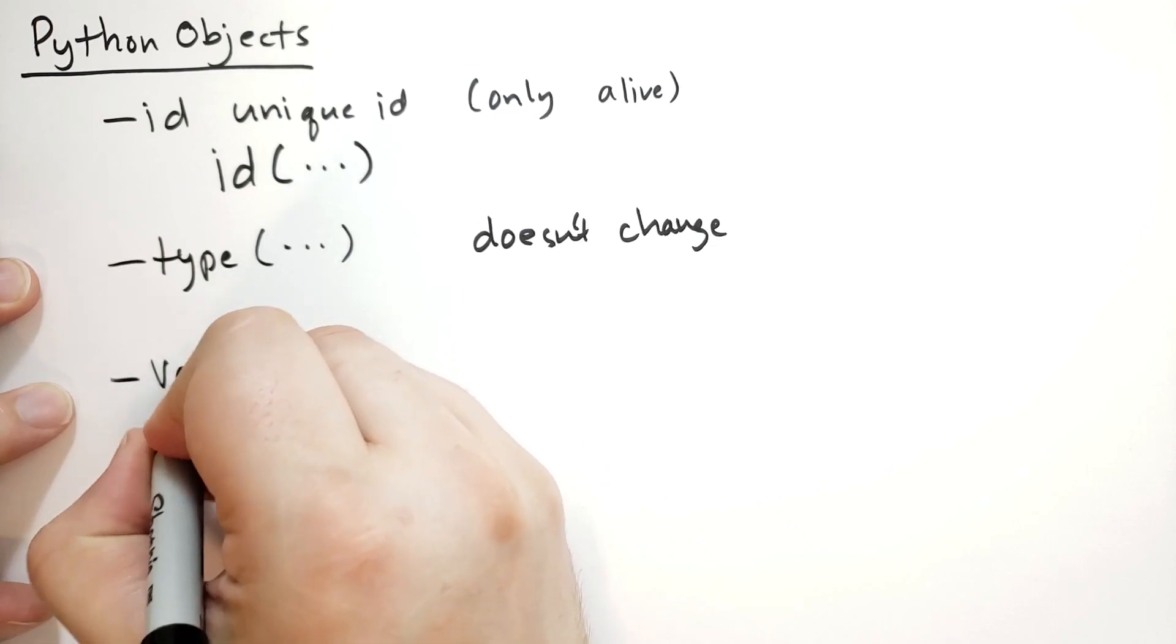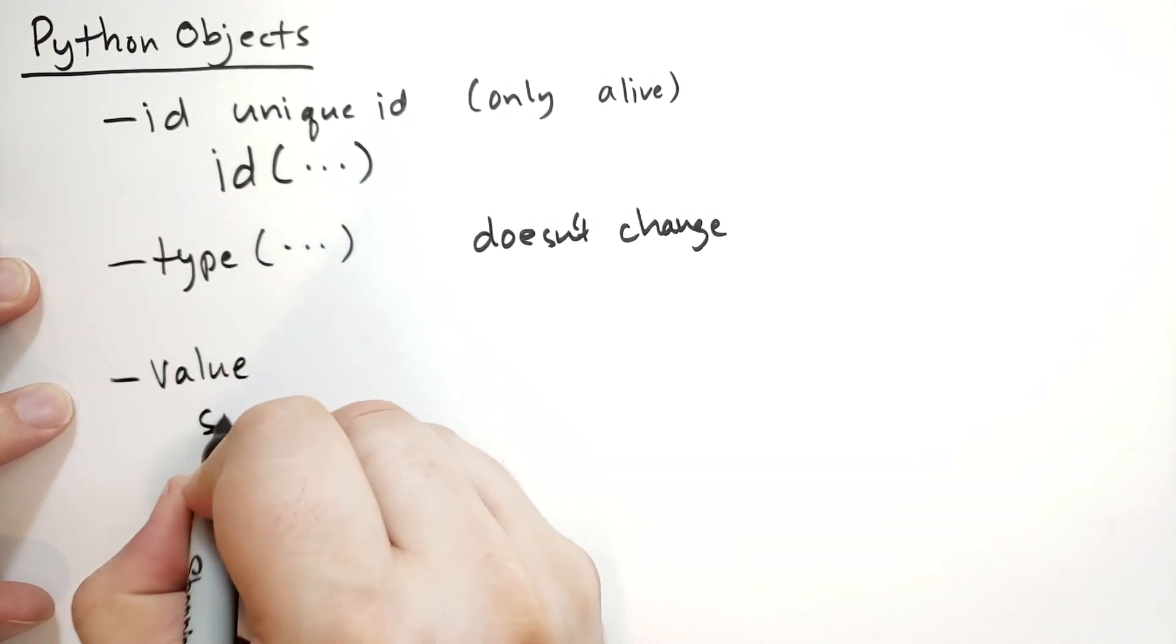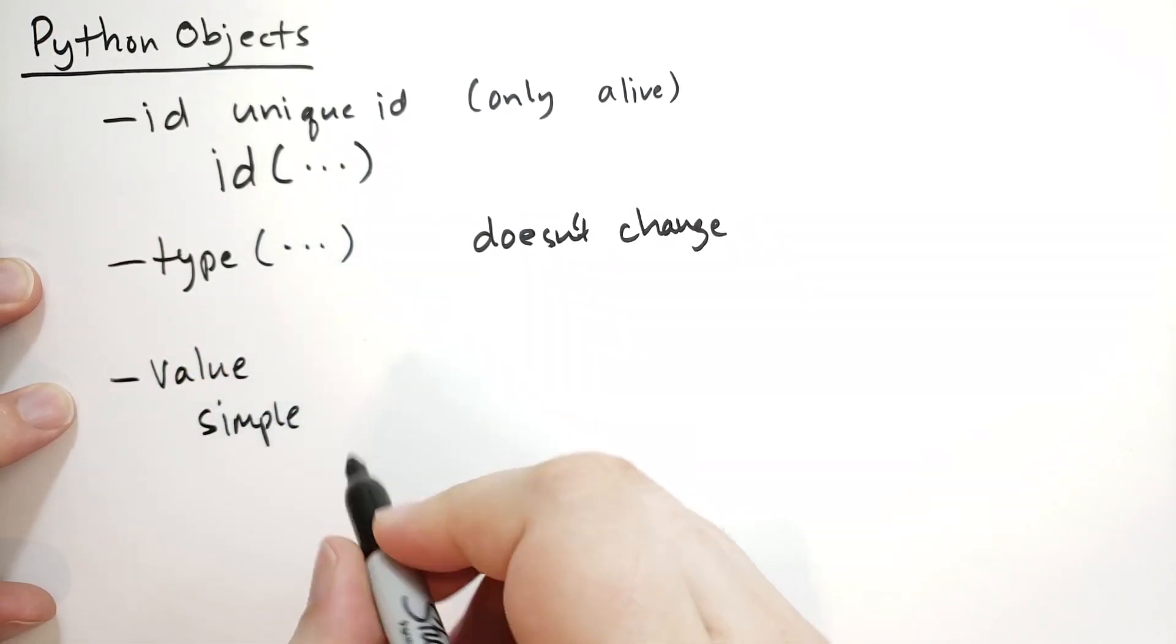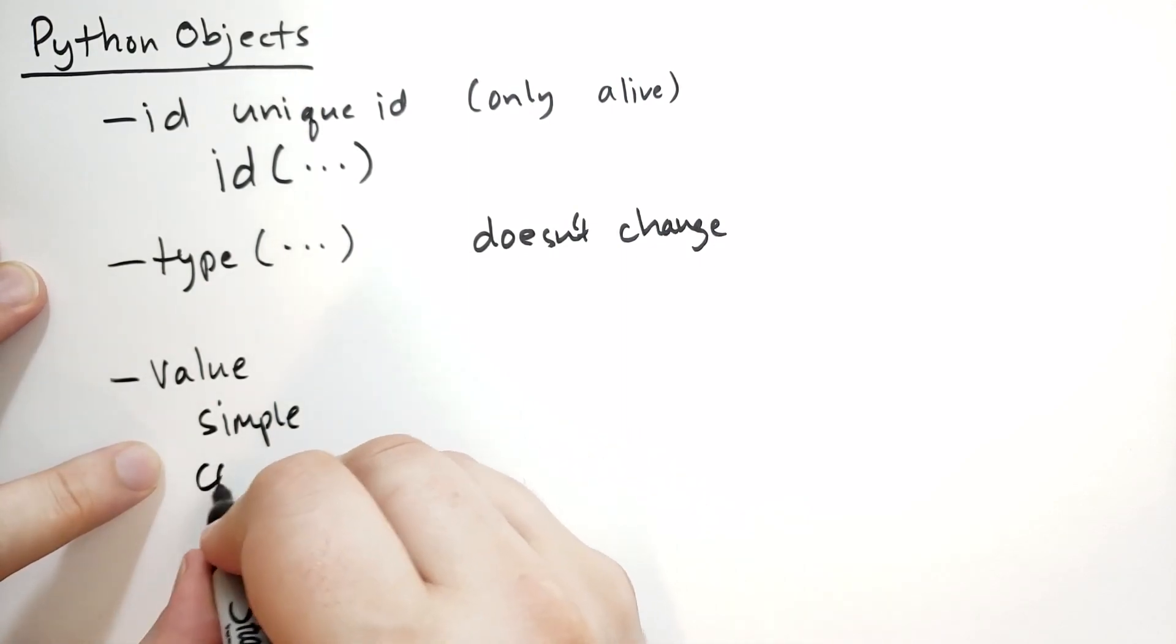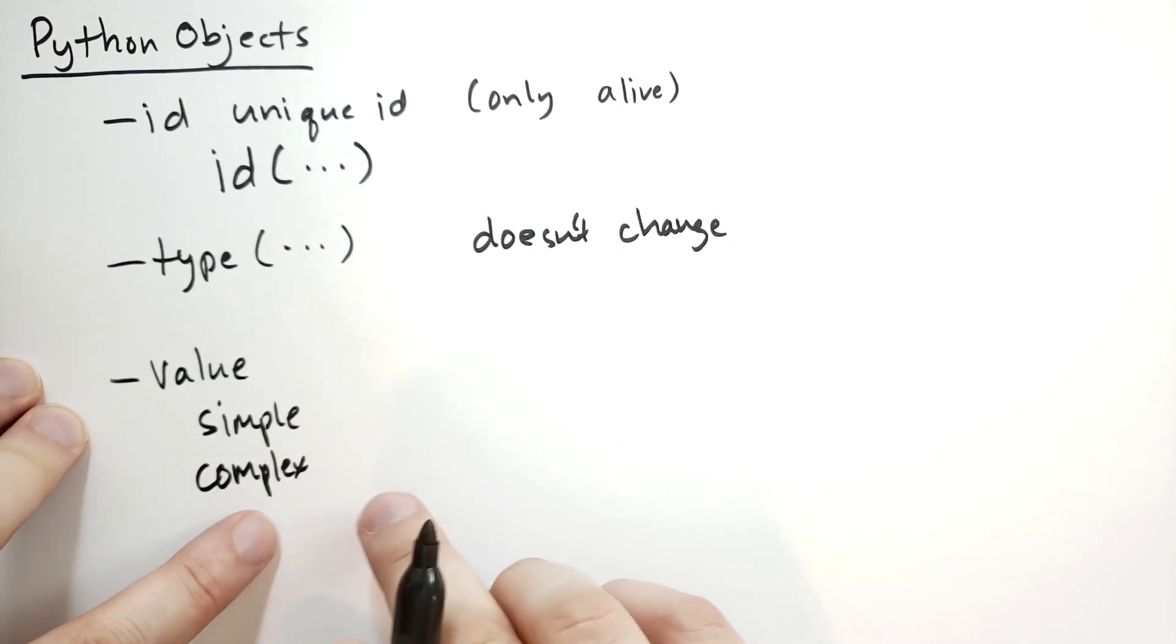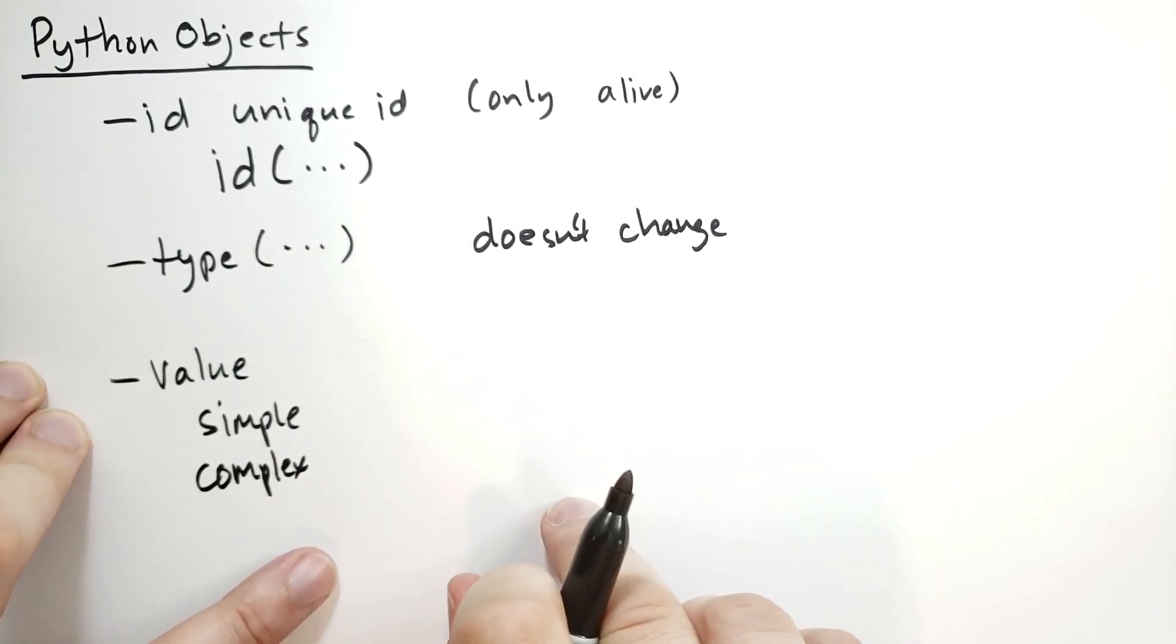Speaking of which, let's talk about the value of an object. Some of them are simple, they have a single value. Some of them are complex, they have multiple values. Like our complex numbers have a real part and an imaginary part.